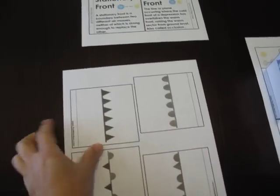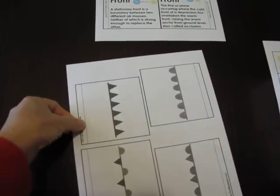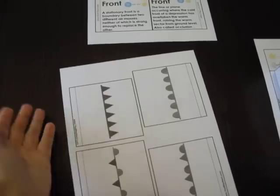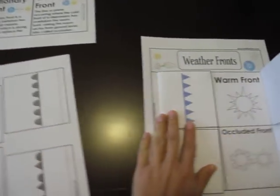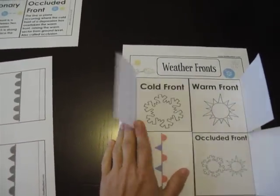You just cut out the flaps on this sheet and I put a little line there showing you where you're going to bend it so that you can create the flap and it'll be easier to open and close.